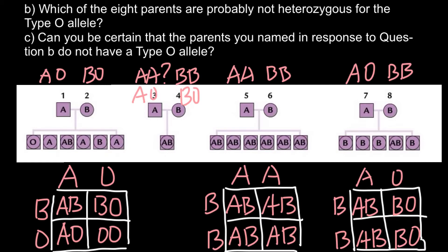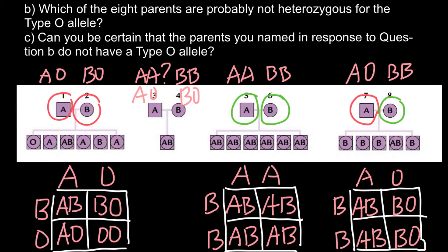So for Question A, we can definitely say that parent 1 (male, blood group A) is heterozygous and parent 2 (female, blood group B) is heterozygous — we can say this for sure. As for the rest, we cannot be certain. For Question B — which of the eight parents are probably not heterozygous for the type O allele — most likely these are parents 5 and 6, and maybe parent number 8.